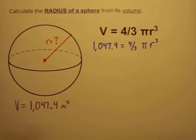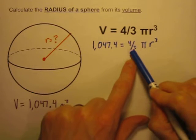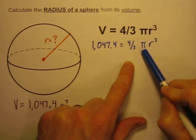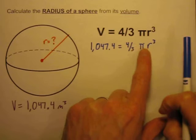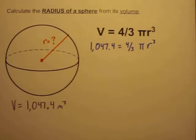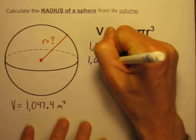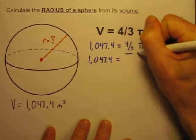So the first thing I would do—and this is how I've found that my students have the most success—is let's simplify this right side a little bit. Here are three terms multiplied together: 4/3 times π times the radius to the third power. I want to solve for r, so let's multiply these two terms together to make a single term. So I'm still going to have 1,047.4 here on the left, but over here let's do 4/3 times π.